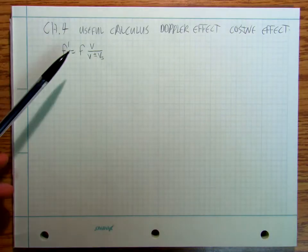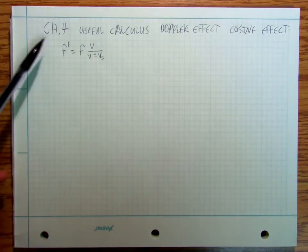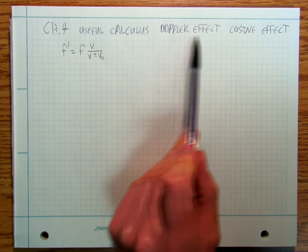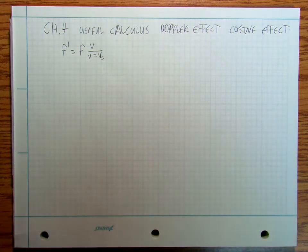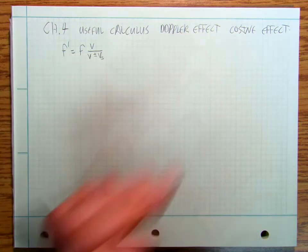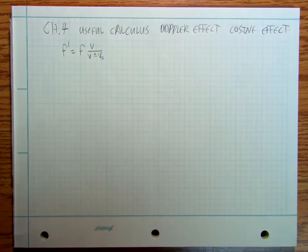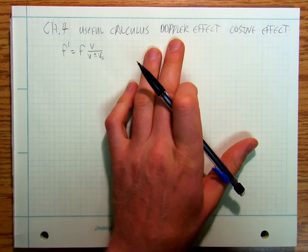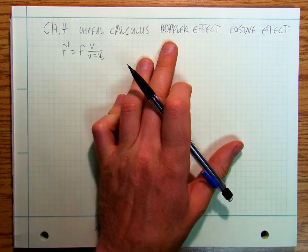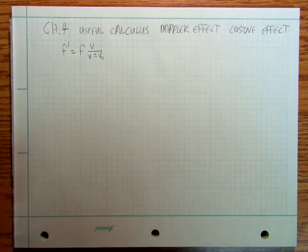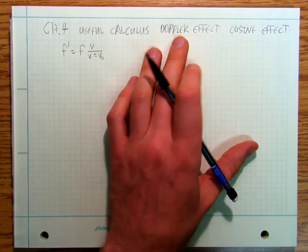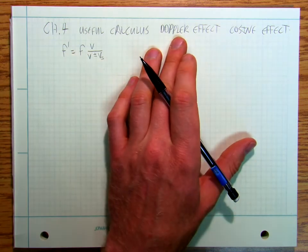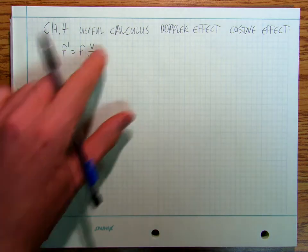We have some more useful calculus on tap for chapter 4, and we're going to talk about the Doppler effect and the cosine effect. If you don't know what the Doppler effect is, do a little research, go to YouTube, watch a video on it, and come back when you know a little bit more about the Doppler effect.